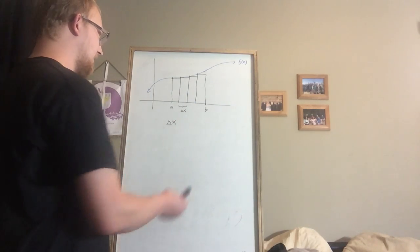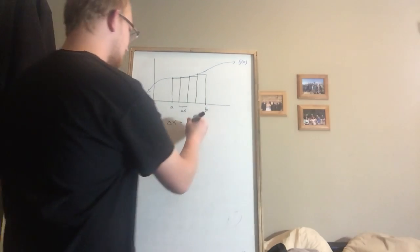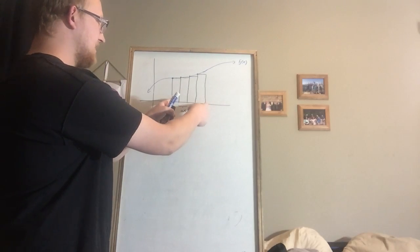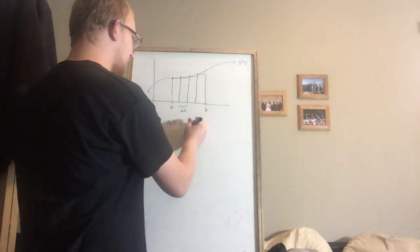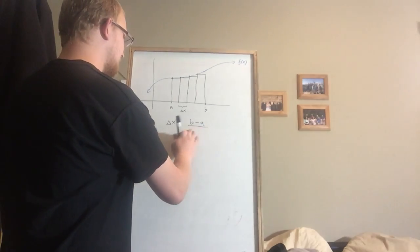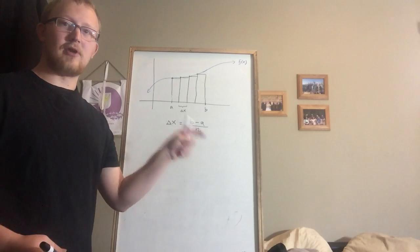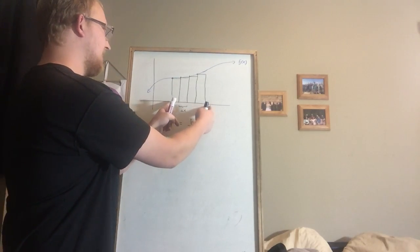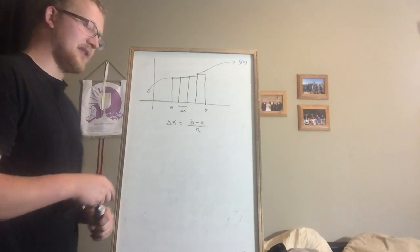How do we figure out what delta x is? We're going to take b, the upper value, minus a, the lower value. That gives us the total interval. If we want 4 rectangles, we divide that by 4. The general formula is b minus a divided by n, where n is the number of rectangles you want. So we took b minus a and divided it evenly 4 times, and that's going to be our width delta x.